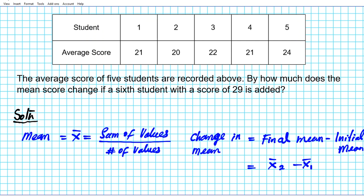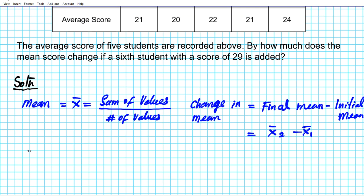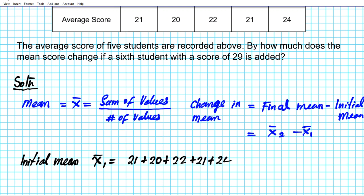Let's apply these formulas to this problem. We want to find the initial mean first — basically the mean score of the five students. The initial mean, x-bar-1, is the sum of values: 21 plus 20 plus 22 plus 21 plus 24, divided by the number of values, which is five. This gives us the initial mean before the sixth student's score is added.